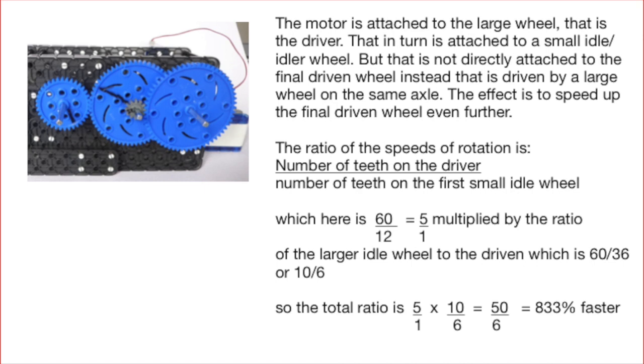Of the larger idle wheel to the driven is 60 to 36 or 10 to 6. Again multiplying those two together gives us 50 over 6. That's 833 percent, 8.33 times faster than the driver.